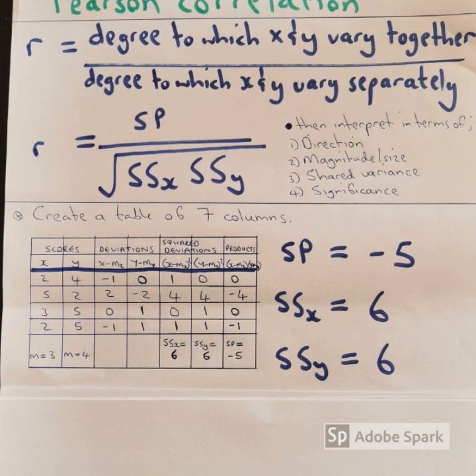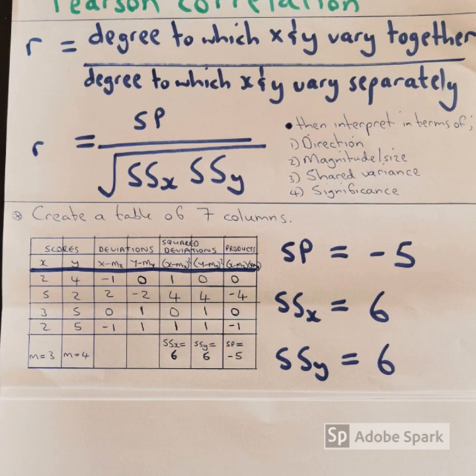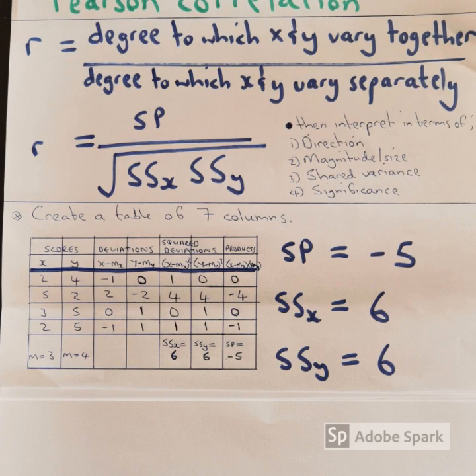The next two columns are for deviations, so you square the deviations. So the total of that is sum of squares, that is for x and then sum of squares for y, that is 6 and 6.